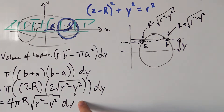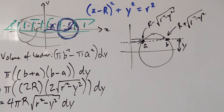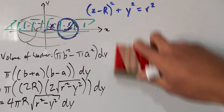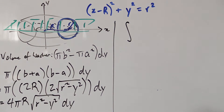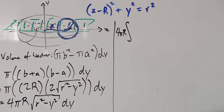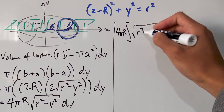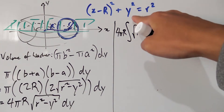This expression, 4πR√(r² − y²) dy, is our final expression for the volume of each washer cut along our doughnut. Now all that's left is to integrate. Since 4πR is a constant in terms of y, we pull it out front and integrate √(r² − y²) dy.